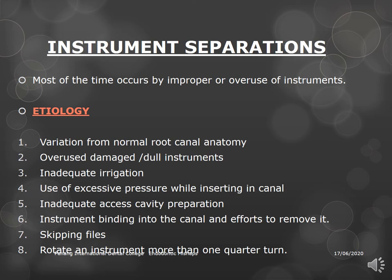Instrument separation (breakage) is usually due to improper or overuse of instruments. Causes include variation from root canal anatomy such as severe curvature, overuse or dull instruments, inadequate irrigation, excessive pressure on insertion, inadequate access cavity preparation, instrument binding with forced removal, skipping file sizes, and rotating an instrument more than one quarter turn.